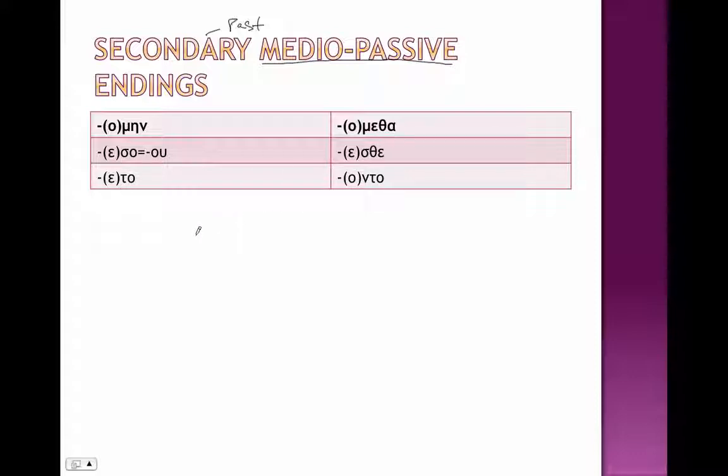But like with the present tense, we're going to add a theme vowel, so theme vowel plus ending. And so these theme vowels are going to be again omicron and epsilon, o main, eso, which contracts after we lose the intervocalic sigma to u, eto, o meta, sthe, unto.